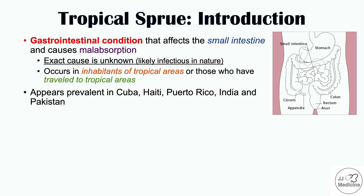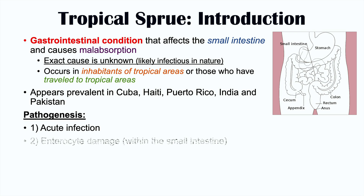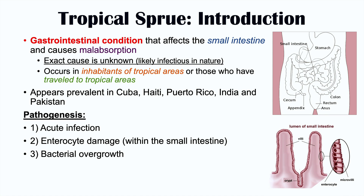The pathogenesis of this condition is believed to be as follows. There is an acute infection, and this acute infection causes enterocyte damage. Enterocytes are the cells that line the small intestine. There is subsequent bacterial overgrowth, so the normal gut flora starts to grow and multiply more. And then there's decreased ability to absorb nutrients, which leads to other issues including signs and symptoms we'll talk about later.